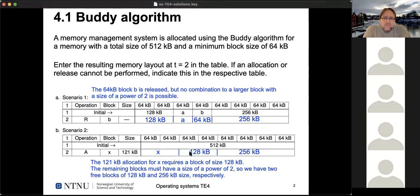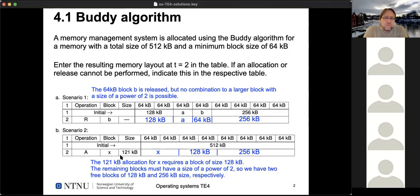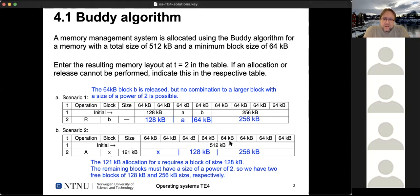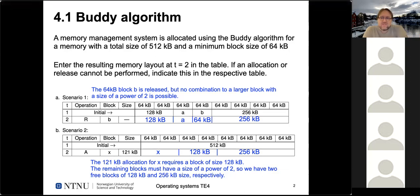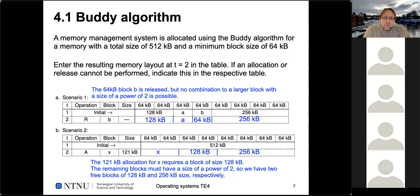In scenario two, we have an initial free memory of the whole large block — 512 kilobytes — and we allocate memory area X which is 121 kilobytes in size. This means we need to find a block that's a power of two and at least as large as our allocation. For 121 kilobytes we need a 128-kilobyte block. We split the 512KB in half — the second half is 256 kilobytes free — then split the first half again, giving a free 128-kilobyte block, and allocate X to the first 128-kilobyte portion.